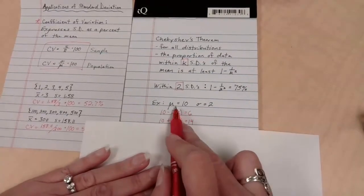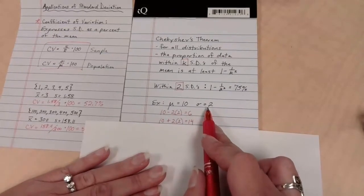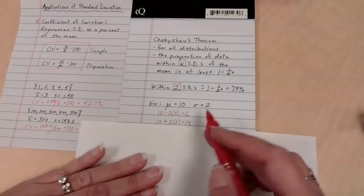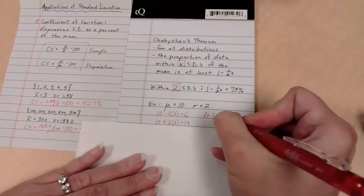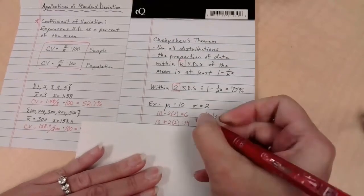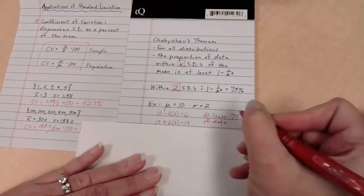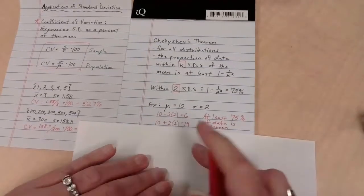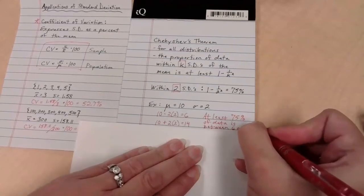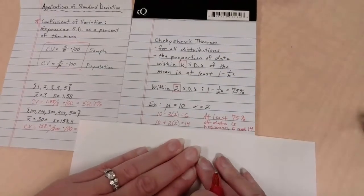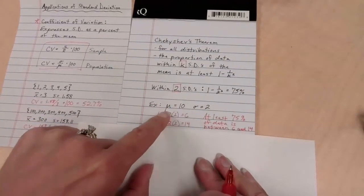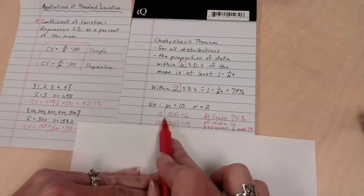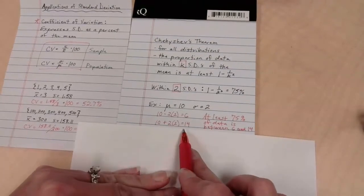For this data set, which, by the way, I don't have any of the specific values for. I don't know how many numbers are in it. I have no idea what the distribution is. I simply know the mean and the standard deviation. I now know that at least 75% of the data is between 6 and 14, because 6 is 2 standard deviations below the mean and 14 is 2 standard deviations above the mean.